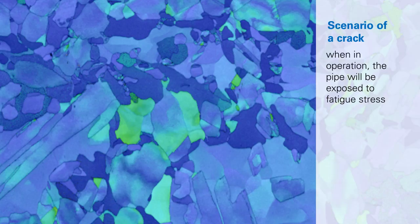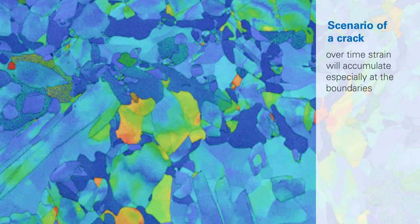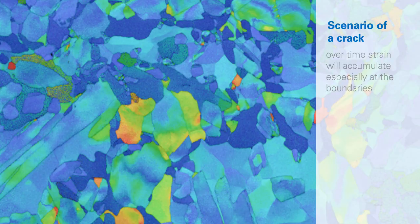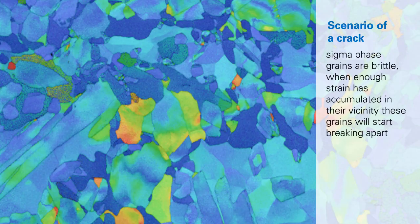When in operation, the pipe will be exposed to fatigue stress. And over time, strain will accumulate, especially at the boundaries. The sigma phase grains are brittle, and when enough strain has accumulated in their vicinity, these grains will then start breaking apart.